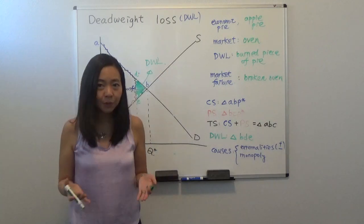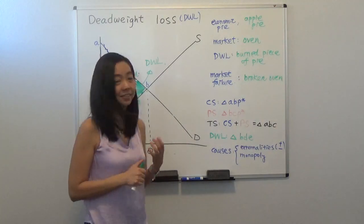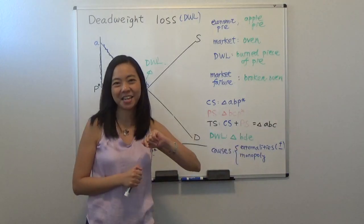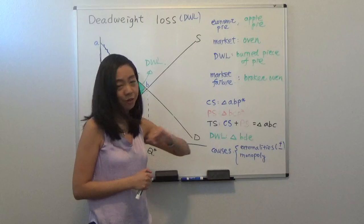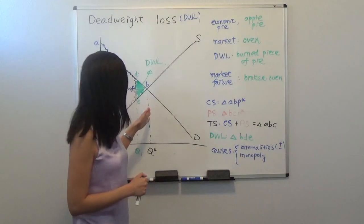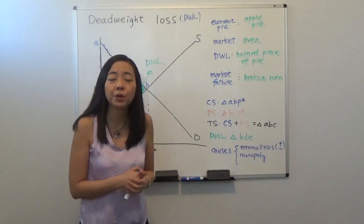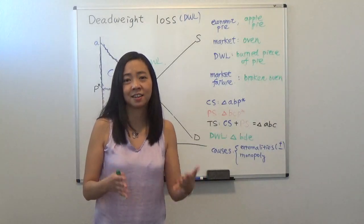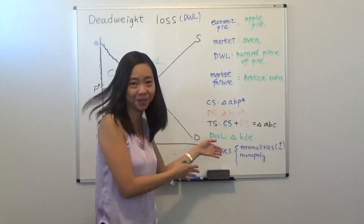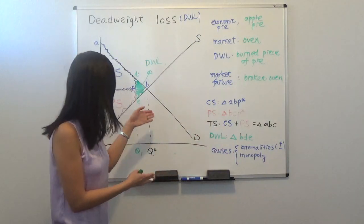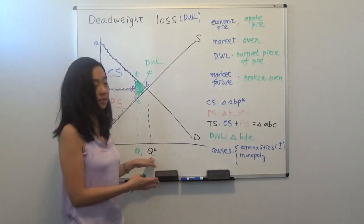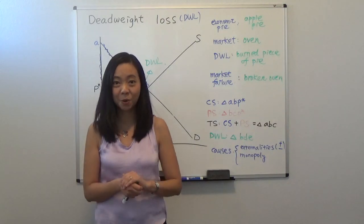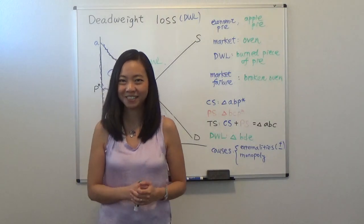So what causes deadweight loss? I want you to go ahead and take a look at the video clip about externalities that I made. So that's one reason that causes market failure and loss. So when we have market failure, we actually need a government to act as a technician to fix our oven so that the market will again produce the best quantity Q star instead of Q1. So I hope this helps and enjoy your learning. See you next time.